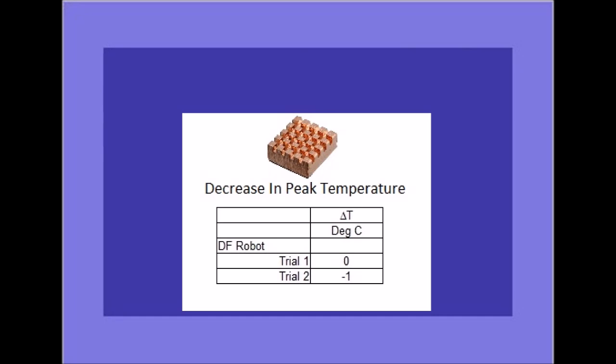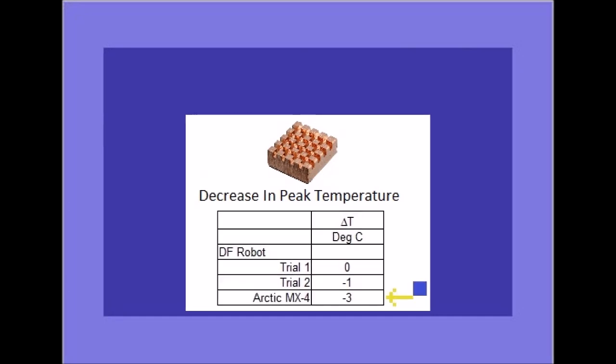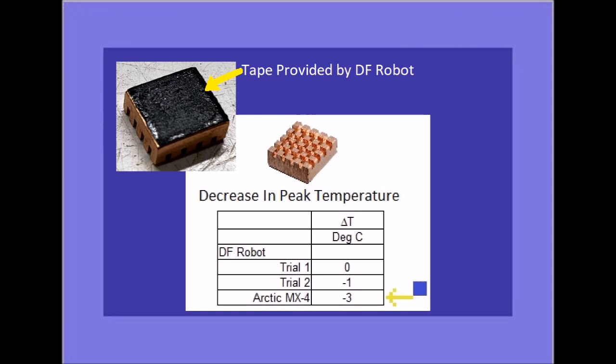I did a previous test using that heatsink, but I did not use the tape that came with it. I used Arctic MX4 heatsink compound and I just stuck it to the CIA chip. And in that case, it did result in a three degree decrease in the peak temperature. So it did have the ability to do cooling. What that tells me is that the tape that comes with the DFrobot heatsinks is likely the source of this problem. It doesn't appear to me to be a thermal tape. It's a little bit like electrical tape, but it's sticky on two sides and it must be acting as an insulator.